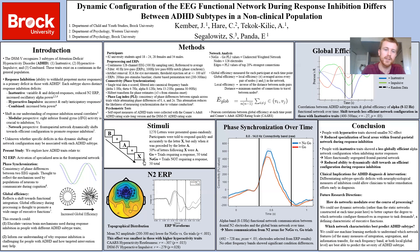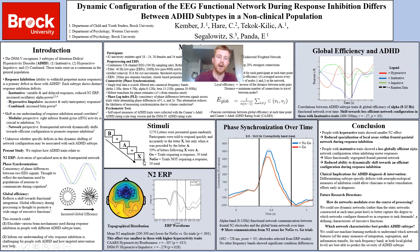Looking again at those alpha networks, we wanted to understand how that organization changes over time and whether that change is associated with any of the subtypes. On the right, you can see our measure of global efficiency over time and how that related to ADHD. In a similar time period from 400 to 500 milliseconds, we found that global efficiency was related to the inattentive subtype. This suggests that those with the inattentive subtype have a reduced ability to configure towards the efficient organization necessary to promote inhibition. Taken together, these results suggest that people with hyperactive traits show reduced specialization of local areas, whereas people with inattentive traits show a less globally efficient network and a reduced ability to configure during processing.